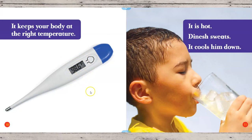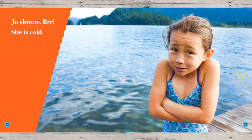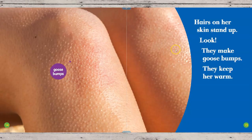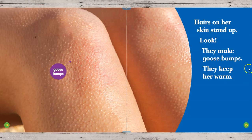Let's look for an example. It's hot outside — Denish is sweating, and the sweat cools him down. When it's hot, your body just knows to do that. Joe shivers — she is cold. Hairs on her skin stand up and make goosebumps to keep her warm. I was curious how little tiny goosebumps keep you warm — one of the SciShow videos explains that.